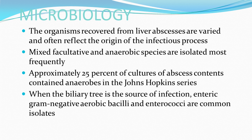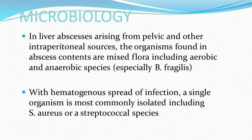The organisms recovered from liver abscesses vary and reflect the origin of infection. Mixed facultative anaerobic species are isolated most frequently; approximately 25% of abscess cultures contain anaerobes. When the biliary tract is the source, enteric gram-negative aerobic bacilli and enterococci are common. Abscesses from pelvic or intraperitoneal sources yield mixed flora including anaerobes and aerobes such as Bacteroides fragilis. With hematogenous spread, a single organism such as Staph aureus or streptococcal species is most commonly isolated.